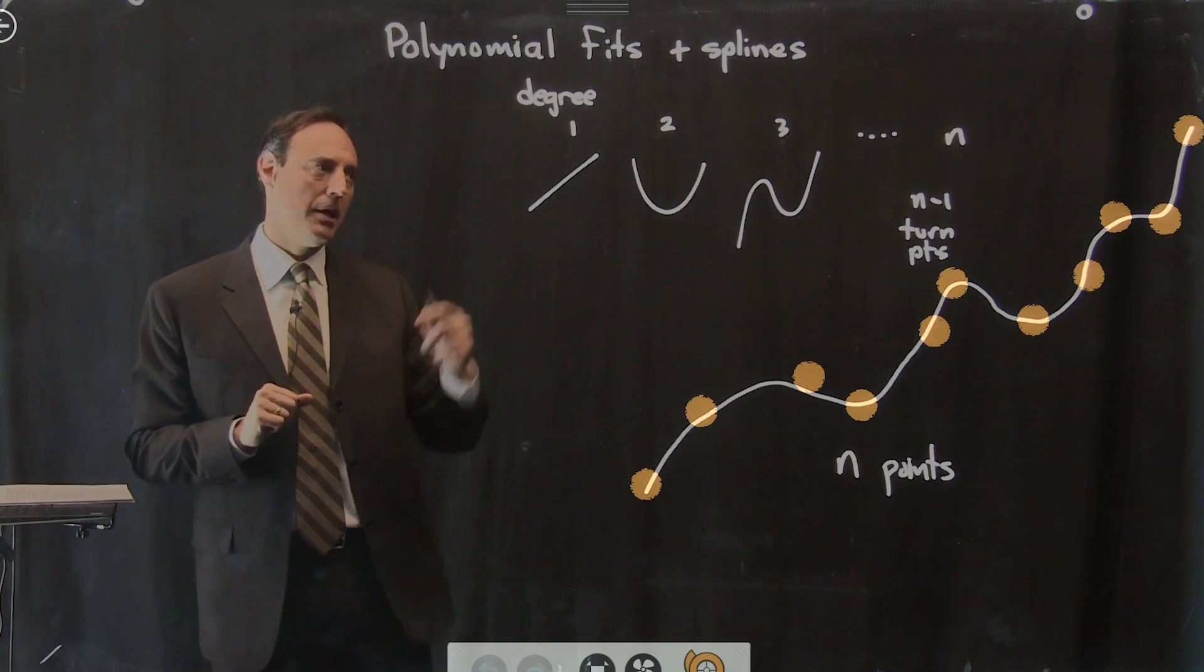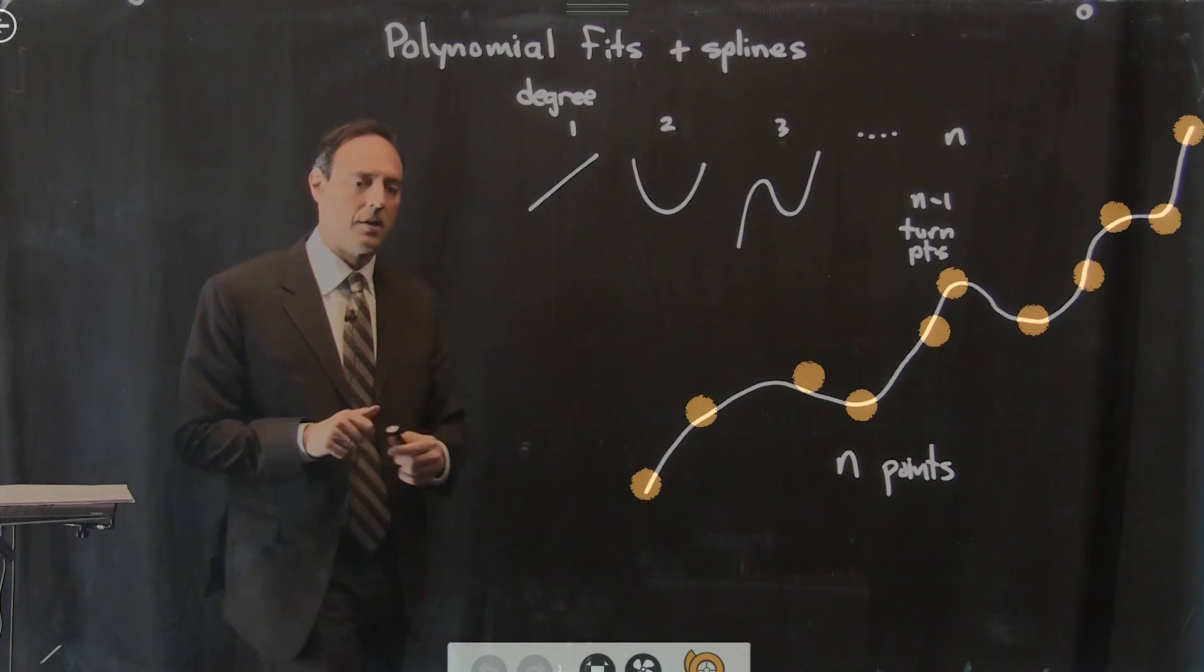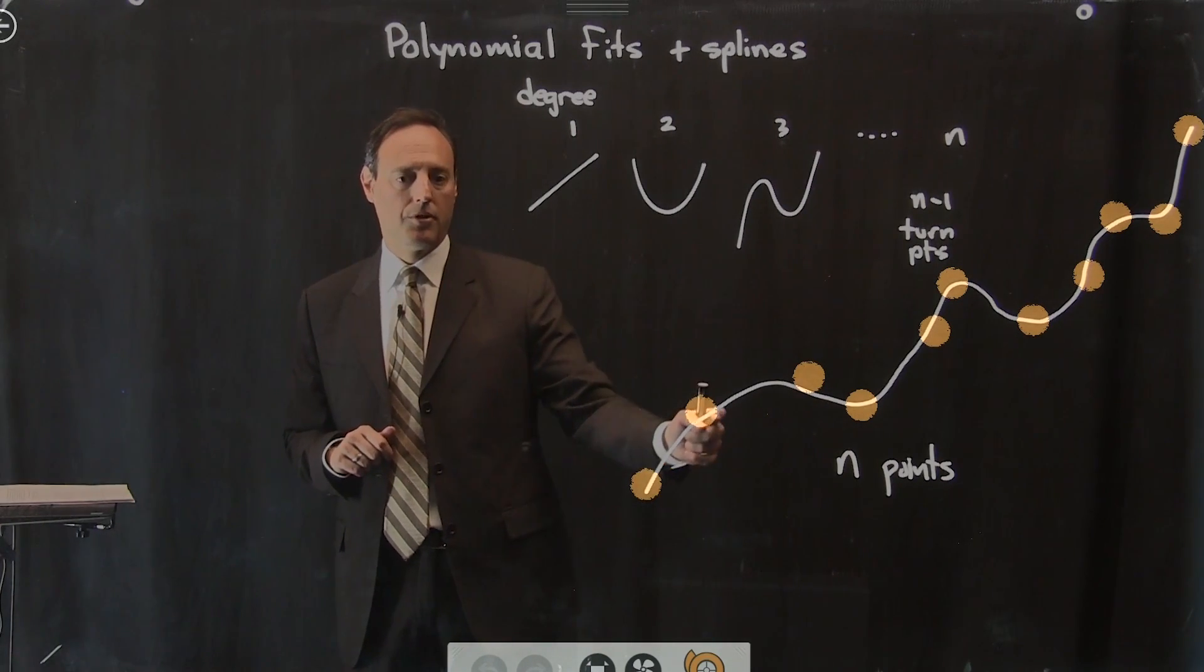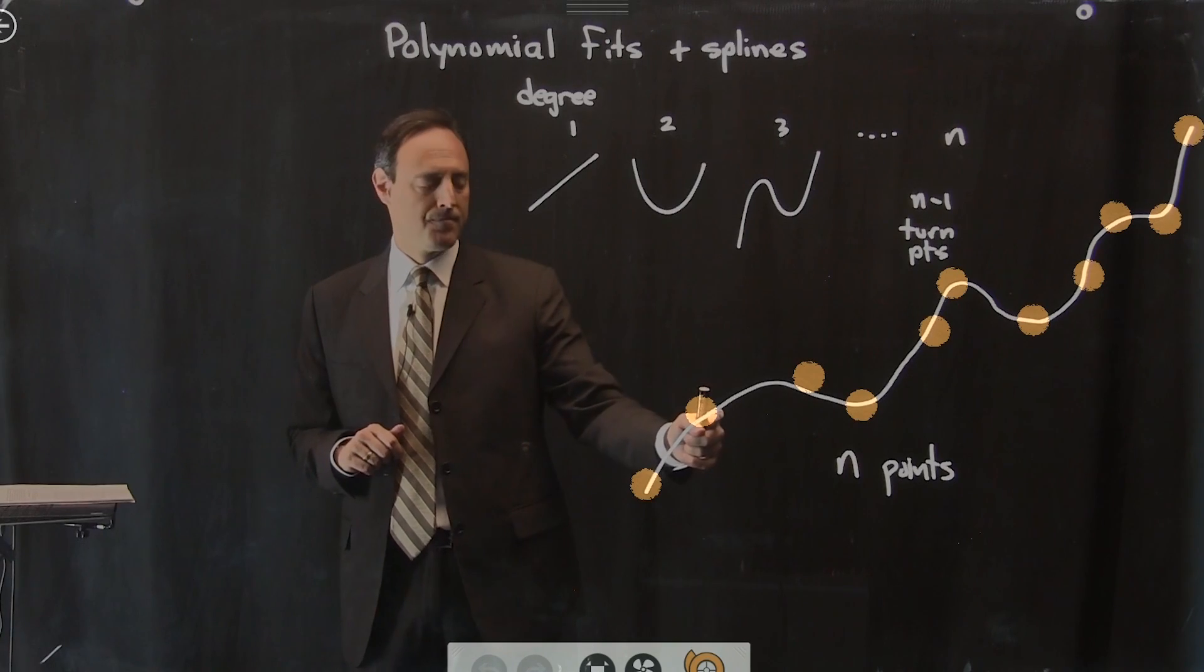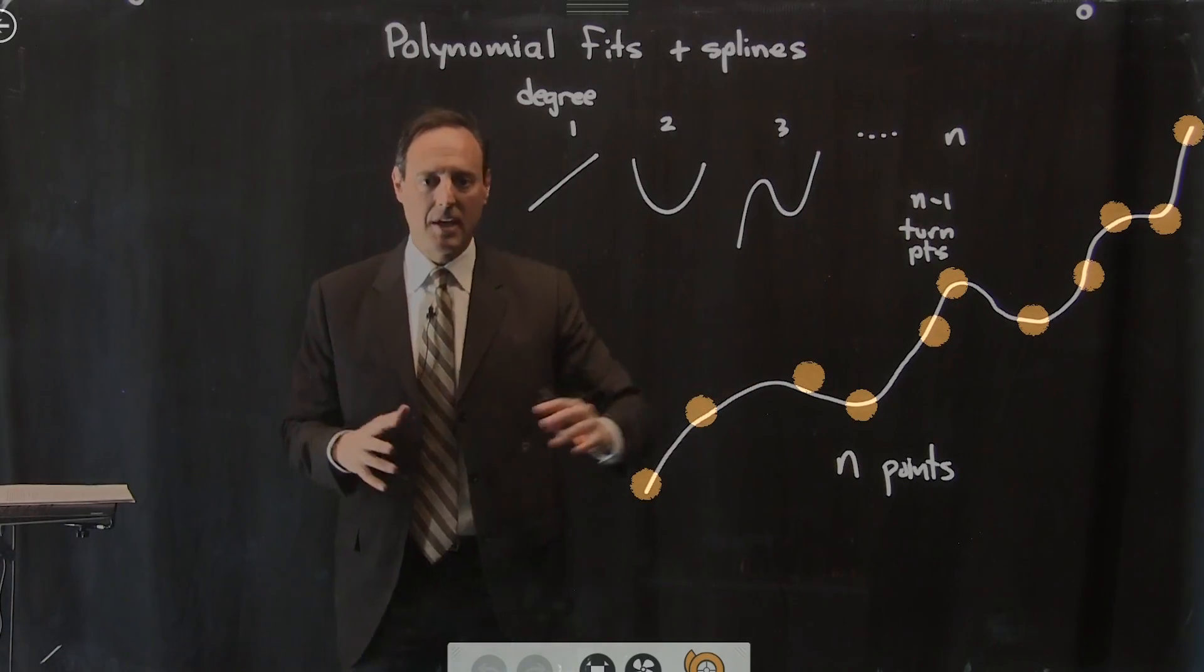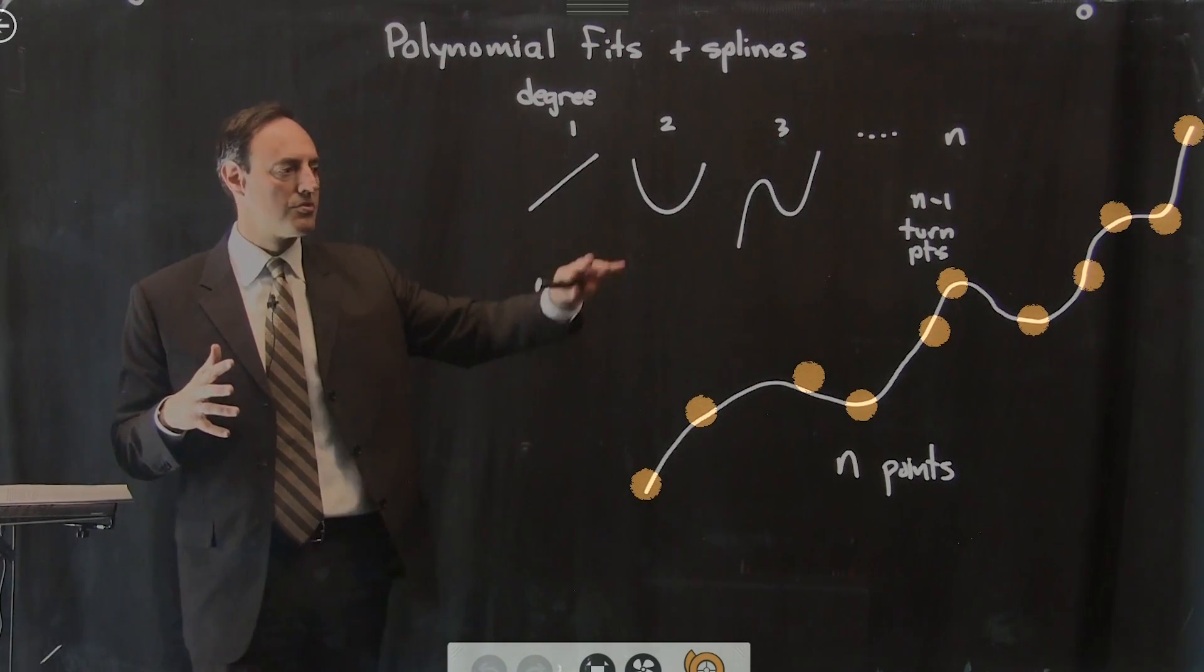Option two is what splines do. What they say is, look, all I need is a local polynomial getting me from one point to the next. And what I really want to do with this is make it nice and smooth, make a really smooth, beautiful curve.